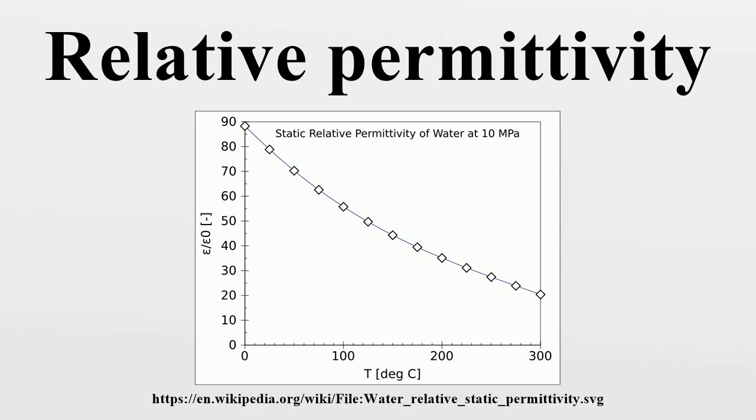The relative permittivity of a material is its dielectric permittivity expressed as a ratio relative to the permittivity of vacuum. Permittivity is a material property that affects the Coulomb force between two point charges in the material.